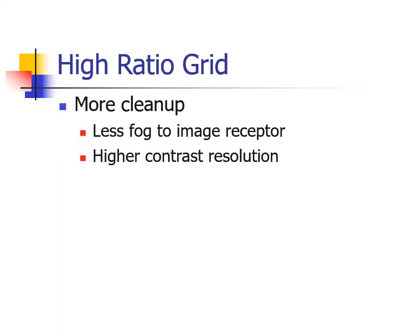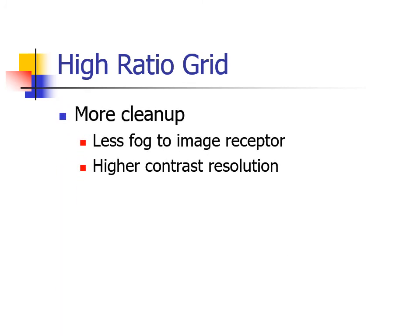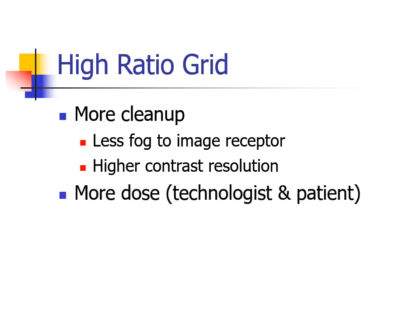So, the advantages of high-ratio grids are less scatter reaching the image receptor and higher contrast resolution. The higher the ratio, the larger the dose to the patient and possibly the radiographer. High-ratio grids are more subject to grid cutoff and mostly used in fixed applications where the orientation of the grid can be rigidly controlled.